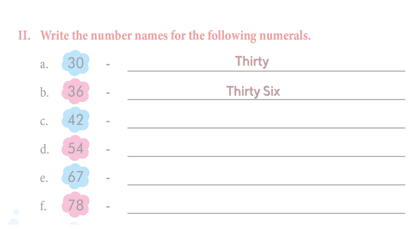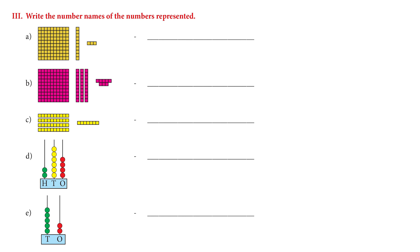Let's move on to page 43: write the number names of numbers represented. Take a look — the first one has a box of tens. If you count the tens there are about a hundred, and in the tens place there is a single ten box, and in the ones place there is a three. All you have to do is count the boxes like you did in the previous class and you will get the answers.